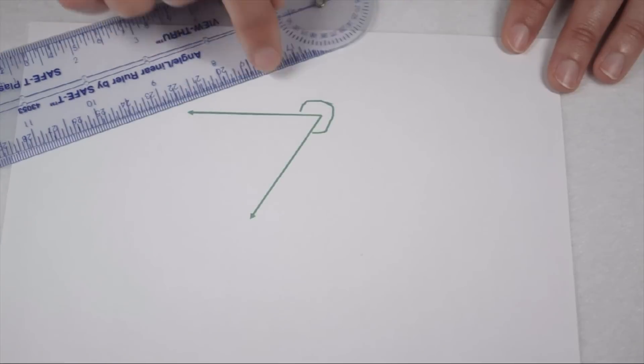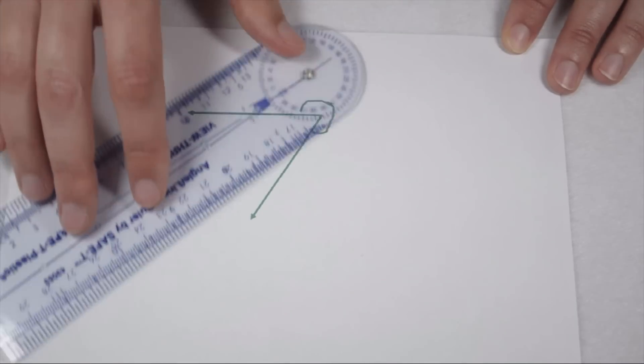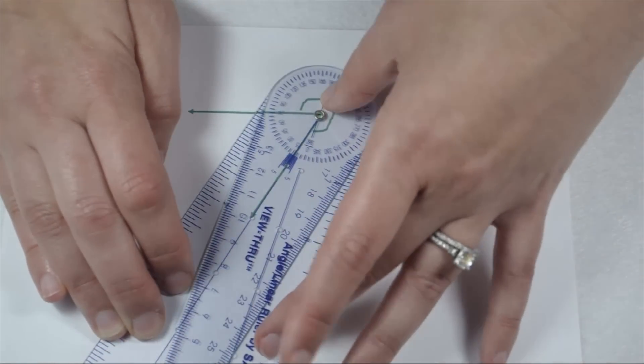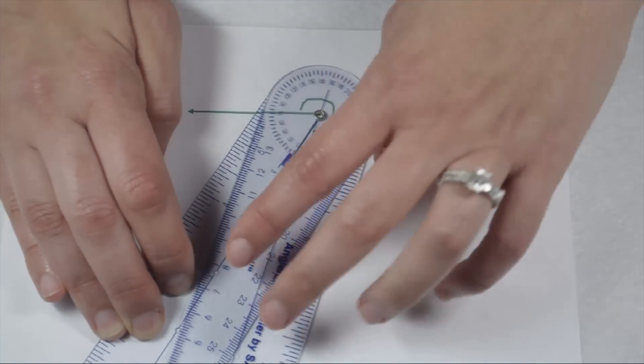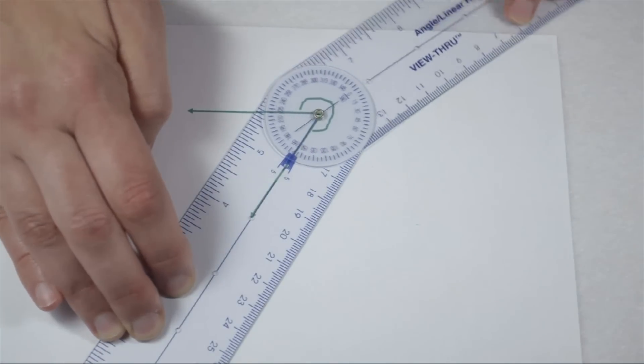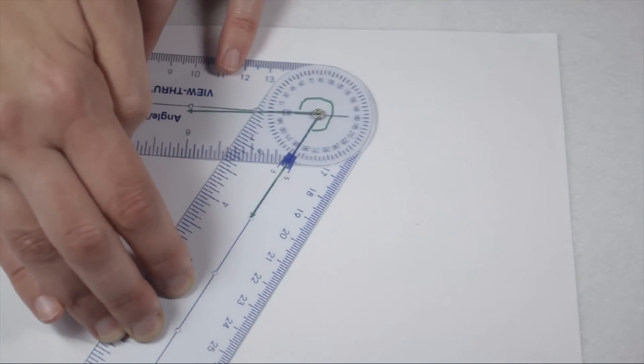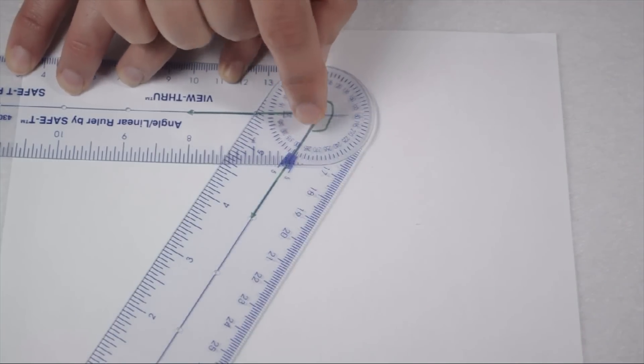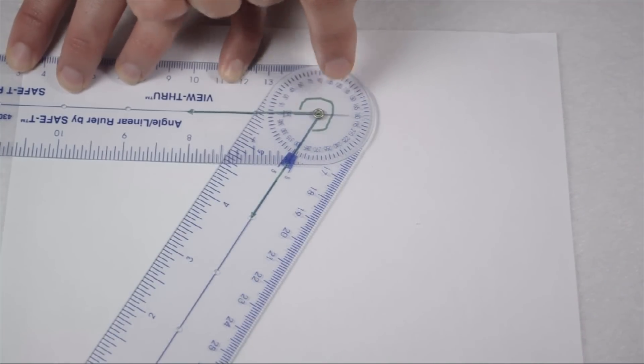In order to measure this angle, we're going to line up along our ray that points more towards the bottom. I'm going to line that up, and when I swing my top arm, it's going to follow this outside curve. When I do, I can see it swings all the way to 300 degrees. So this is a 300 degree angle.